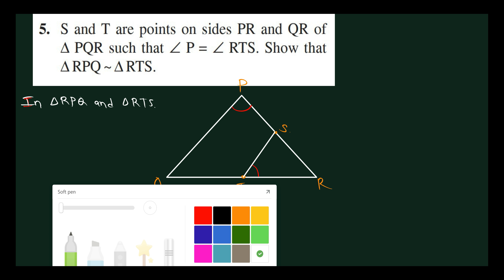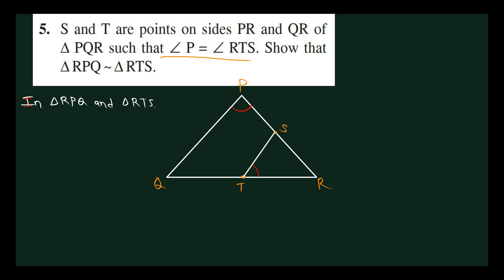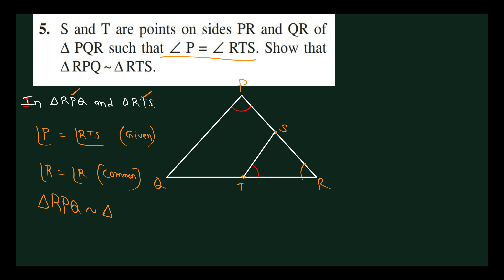Already given. And also we can say angle R equals angle R — this is common. So by AA similarity, can I say triangle RPQ is similar to triangle RTS? Yes, by angle-angle similarity. By AA similarity.